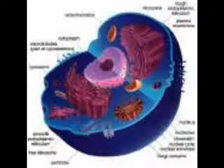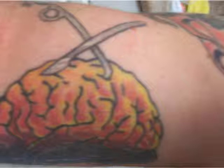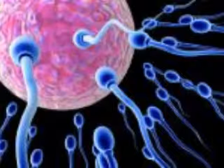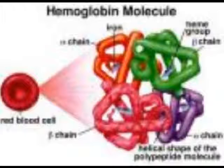Since most eukaryotes are multicellular organisms with many cell types, gene expression must be controlled so different cell lineages develop differently and remain different. A brain cell is quite different from a liver cell because it contains different proteins, even though the DNA in the two cell types is identical. During development and differentiation, different sets of genes are switched on and off. Hemoglobin, for example, is only expressed in developing red blood cells even though the globin genes are present in all types of cells.